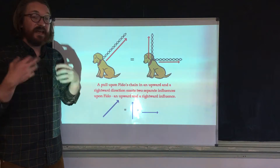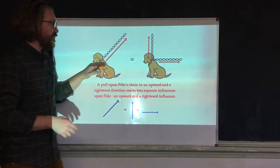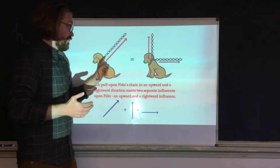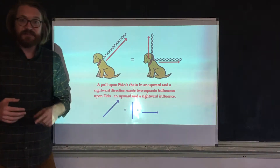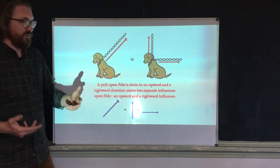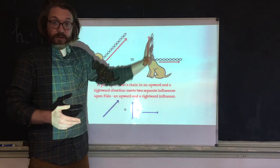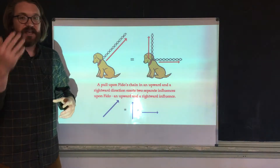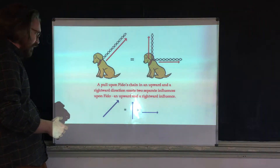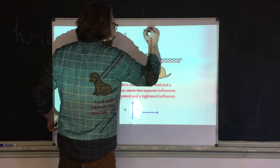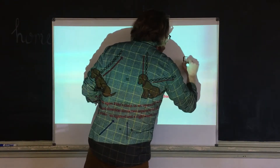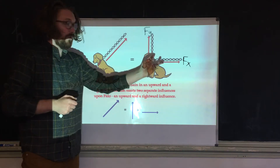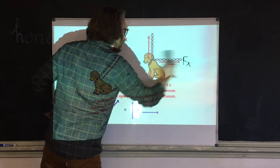Today we're going to look at the same thing we saw with velocities. If we have a force at an angle, part of that force is pulling the leash up and part of that force is pulling the leash over. Much like with velocity, we have names for that. We call the vertical component the y-component of the force, and we call the horizontal component the x-component — same as we saw with velocity and with graphs. The upward direction is Fy and the sideways direction is Fx.